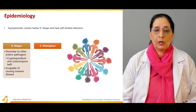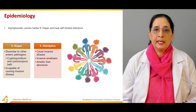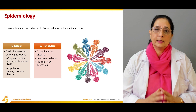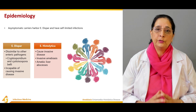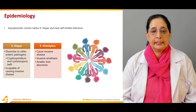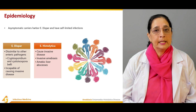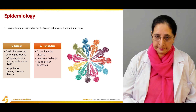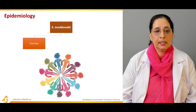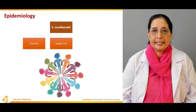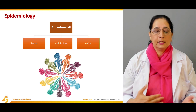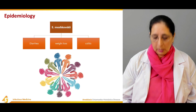Entamoeba histolytica, by contrast, causes invasive disease — invasive amoebiasis and amoebic liver abscess. It is more serious and more damaging; while often asymptomatic initially, it can be fatal due to its invasiveness, causing liver abscess, dysentery, and invasive amoebiasis. Another species, Entamoeba, can cause diarrhea, weight loss, and colitis — illustrating the different clinical manifestations across Entamoeba types.